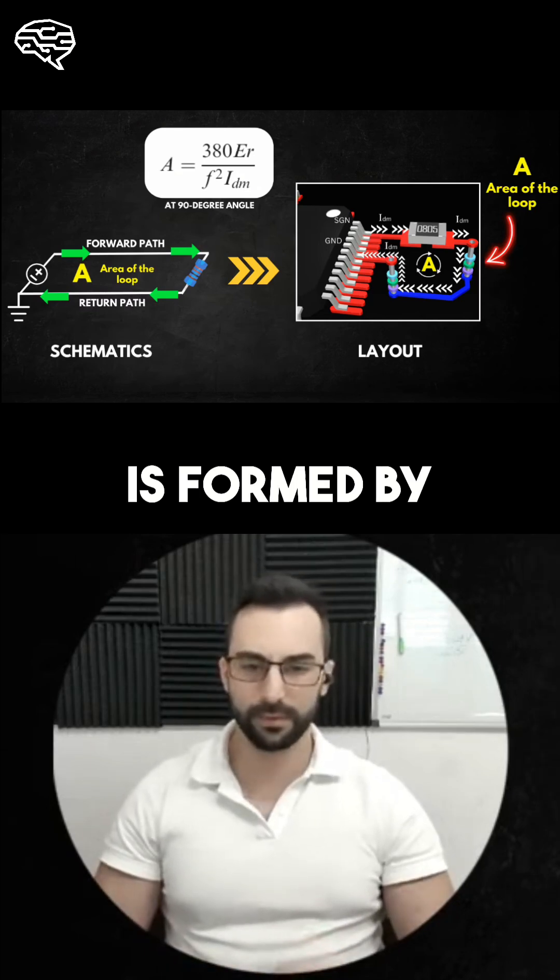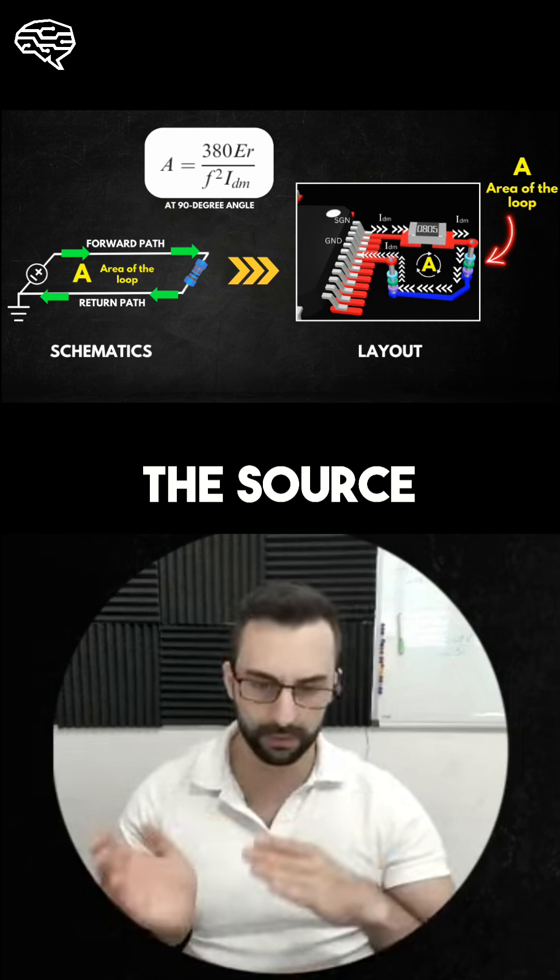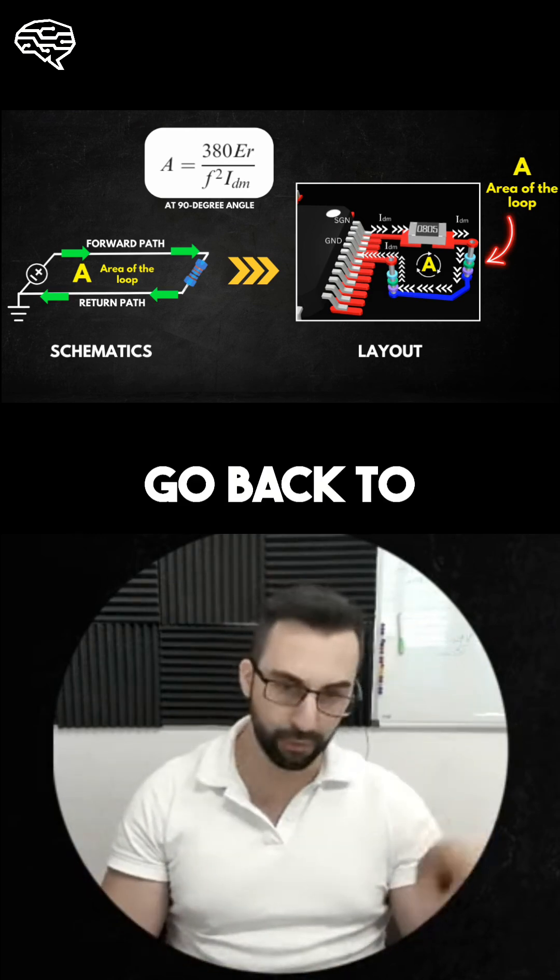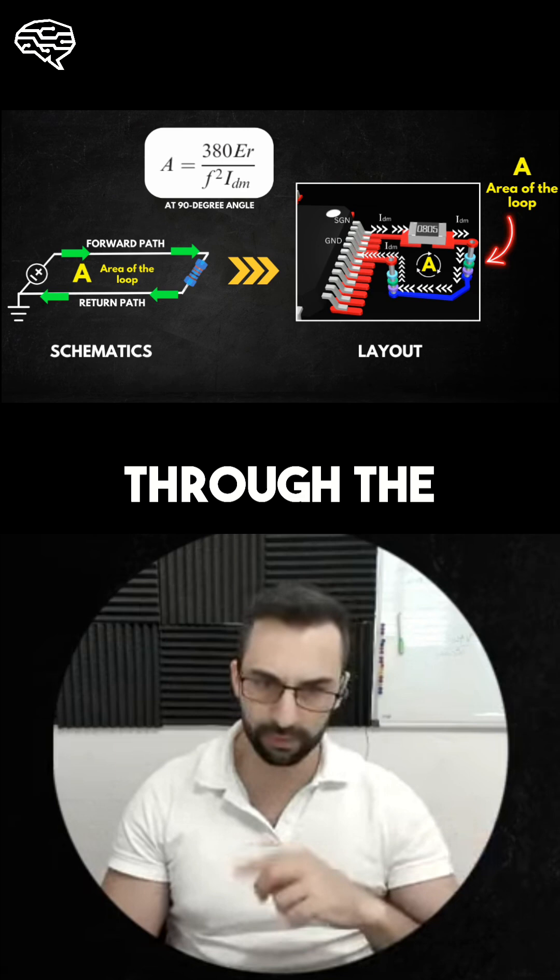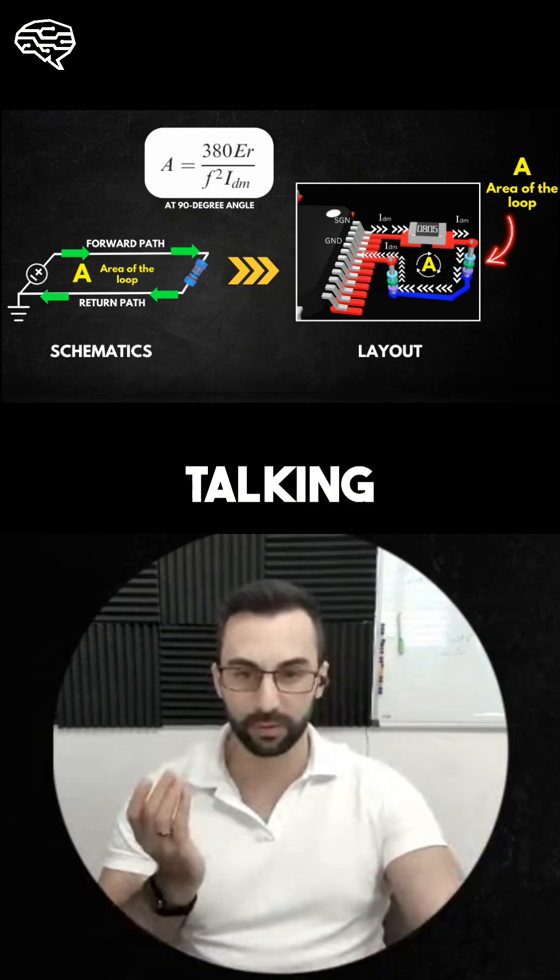The loop is formed by the current flowing from the signal trace, which goes from the source of the signal and then reaches the load. But then it also has to go back to the source through the return reference plane. This is essentially the loop that we're talking about.